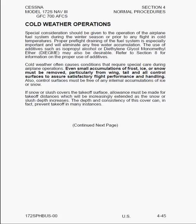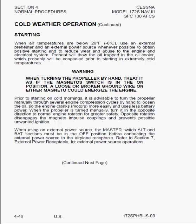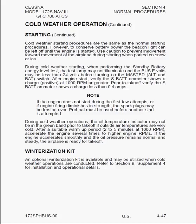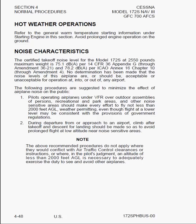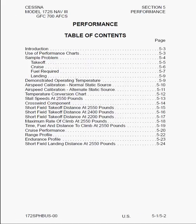Here we have more cold weather operations, noise characteristics, and hot weather operations. Then we go to Section 5, which has a bunch of tables for aircraft performance. And that's all there is to Section 4 — very simple and straightforward.